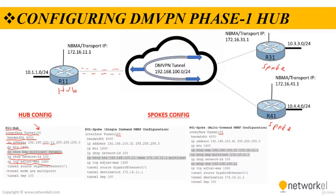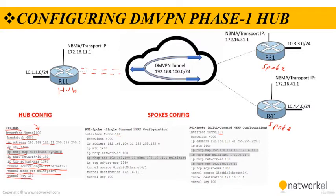We are defining the tunnel source as GigabitEthernet 0/1. The tunnel source depends on the transport type, and the encapsulating interface can also be a logical interface such as a loopback or a sub-interface. Then we are converting the tunnel to a GRE multipoint interface with the command 'tunnel mode gre multipoint'. There is also an optional tunnel key parameter set to 100. This key must match for both hub and spoke routers to establish a tunnel between each other.